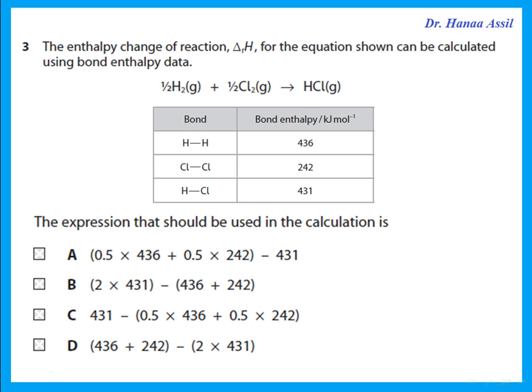The enthalpy change of reaction can be calculated using bond enthalpy data. We determine the energy needed to break bonds in reactants minus the energy released when products are formed. So I need half the H-H bond energy (half of 436) plus half the Cl-Cl bond energy (half of 242), minus the HCl bond energy. So my answer is that first expression.